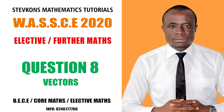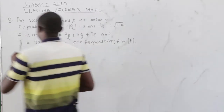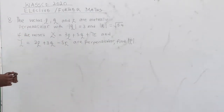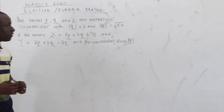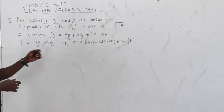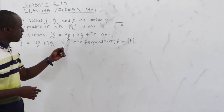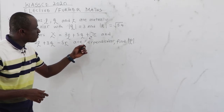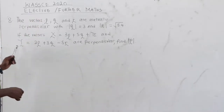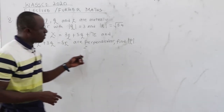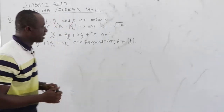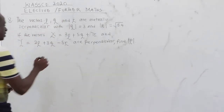Question number 8. Elective mass. The vectors P, Q, and R are mutually perpendicular, with the magnitude of Q equal to 3 and the magnitude of R equal to square root of 5.4. If the vector X equals 3P plus 5Q plus 7R, and the vector Y equals 2P plus 3Q minus 5R are perpendicular, we should find the magnitude of P.